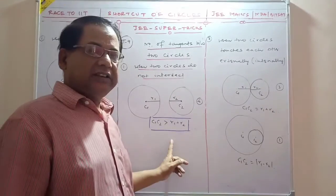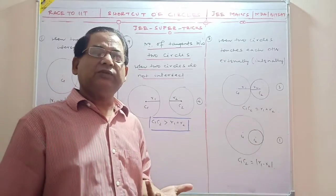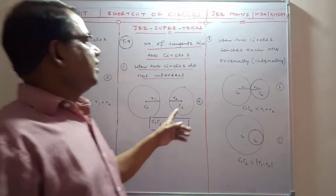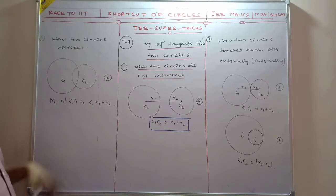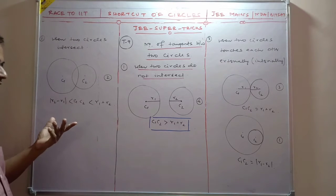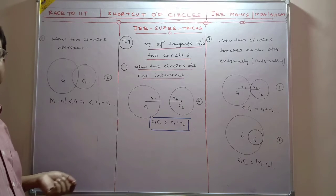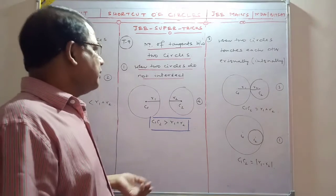When two circles do not intersect, R2 minus R1 is less than C1C2 and it is less than R1 plus R2.